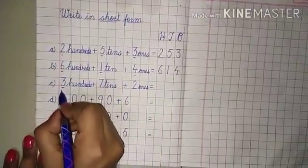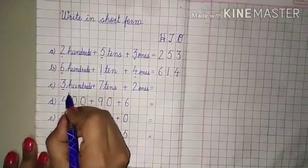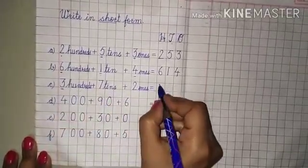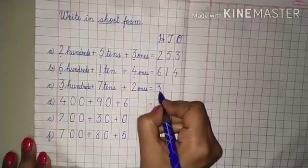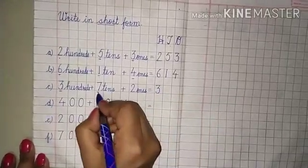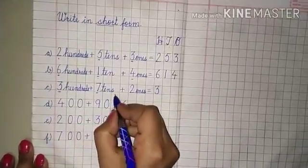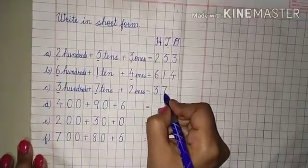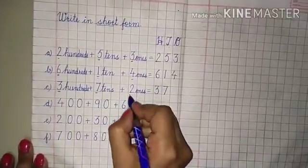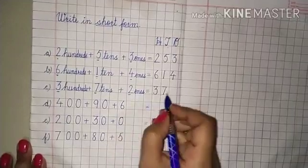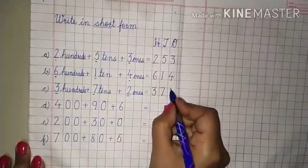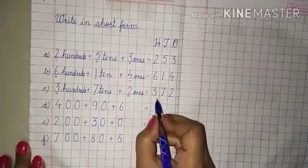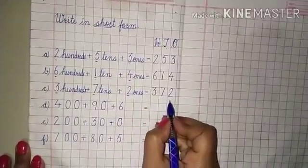Now see the number: three hundreds — it means three will come here. Seven tens — seven will come here. Two ones — two will come here. Three hundred seventy-two.